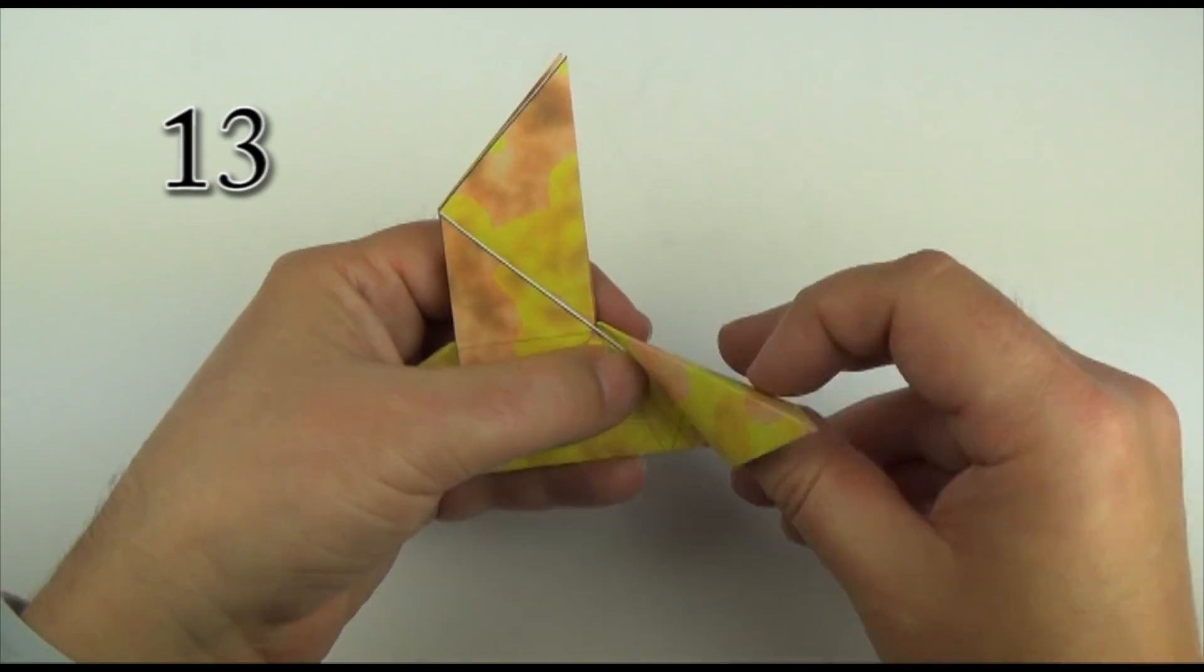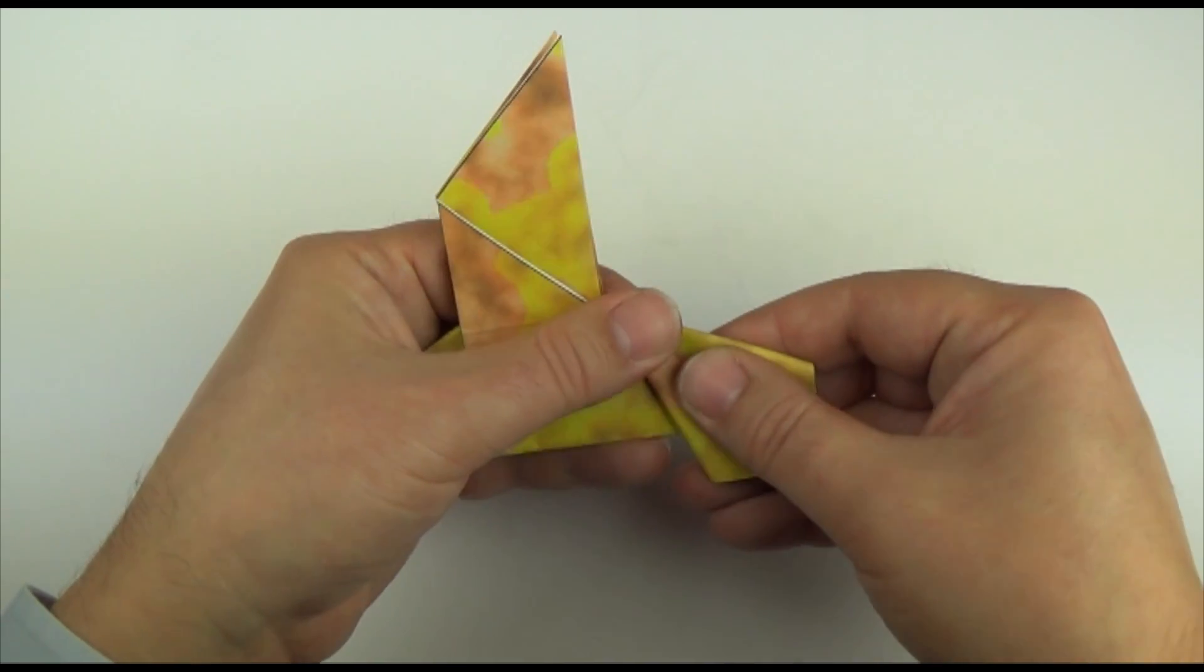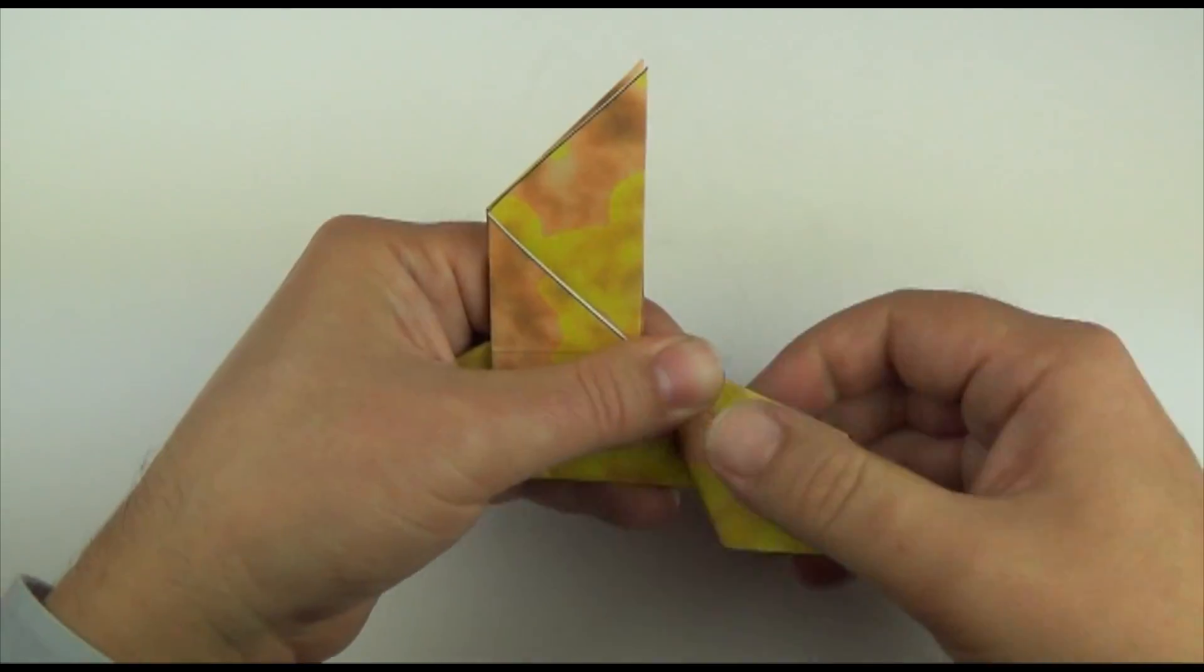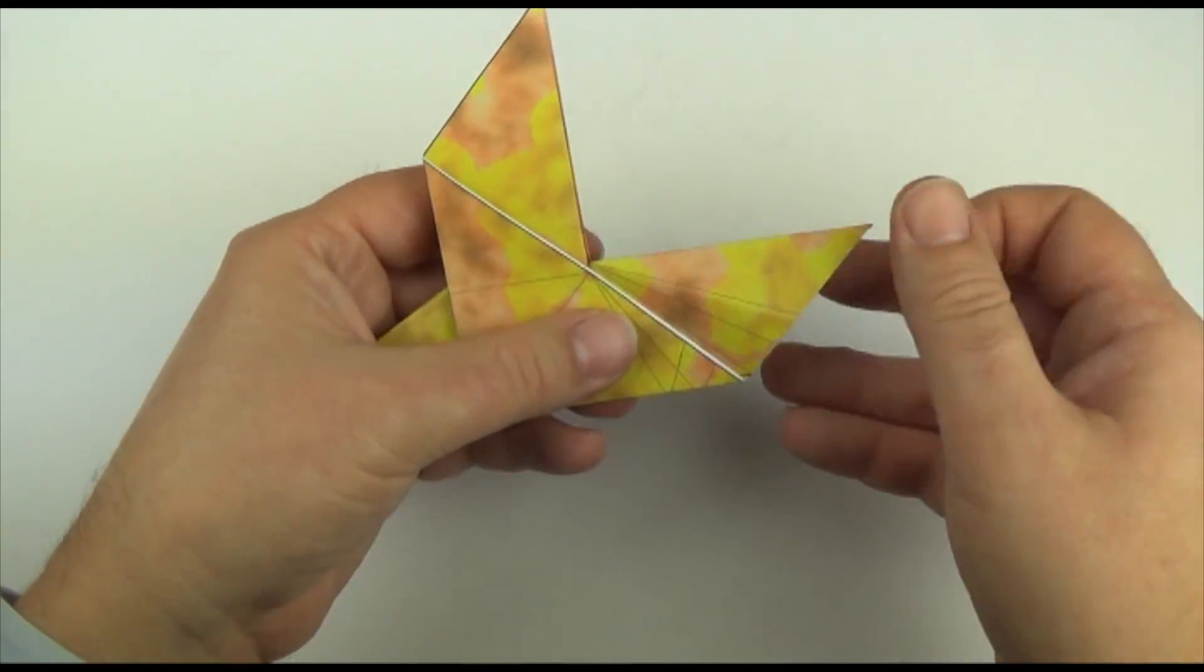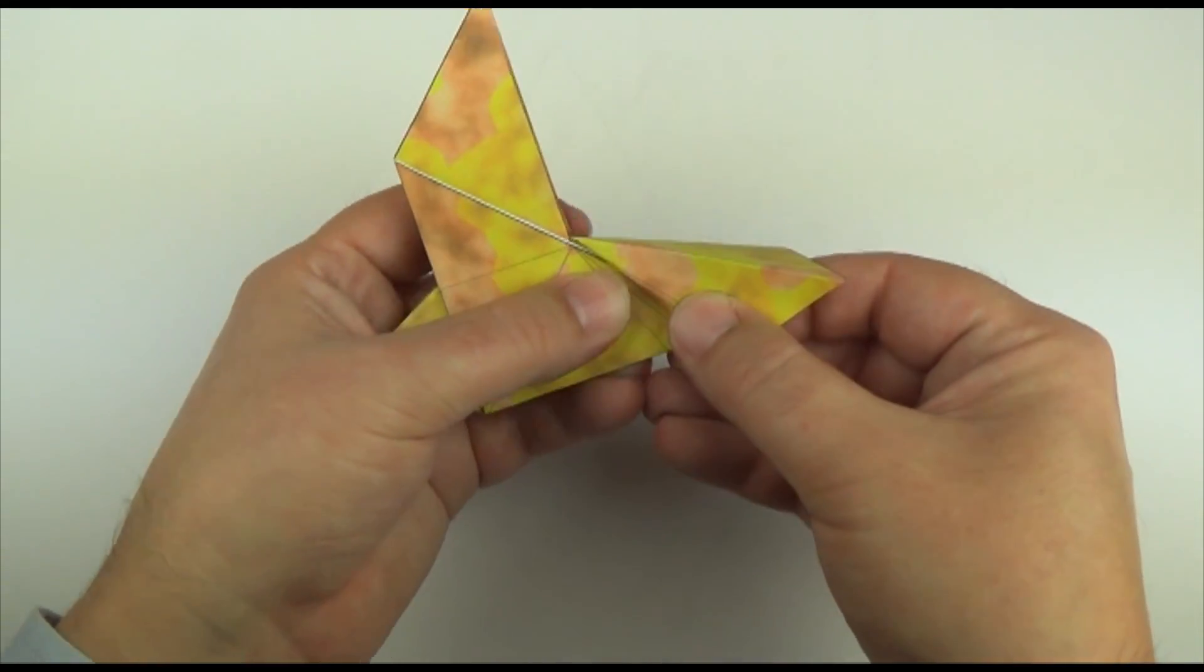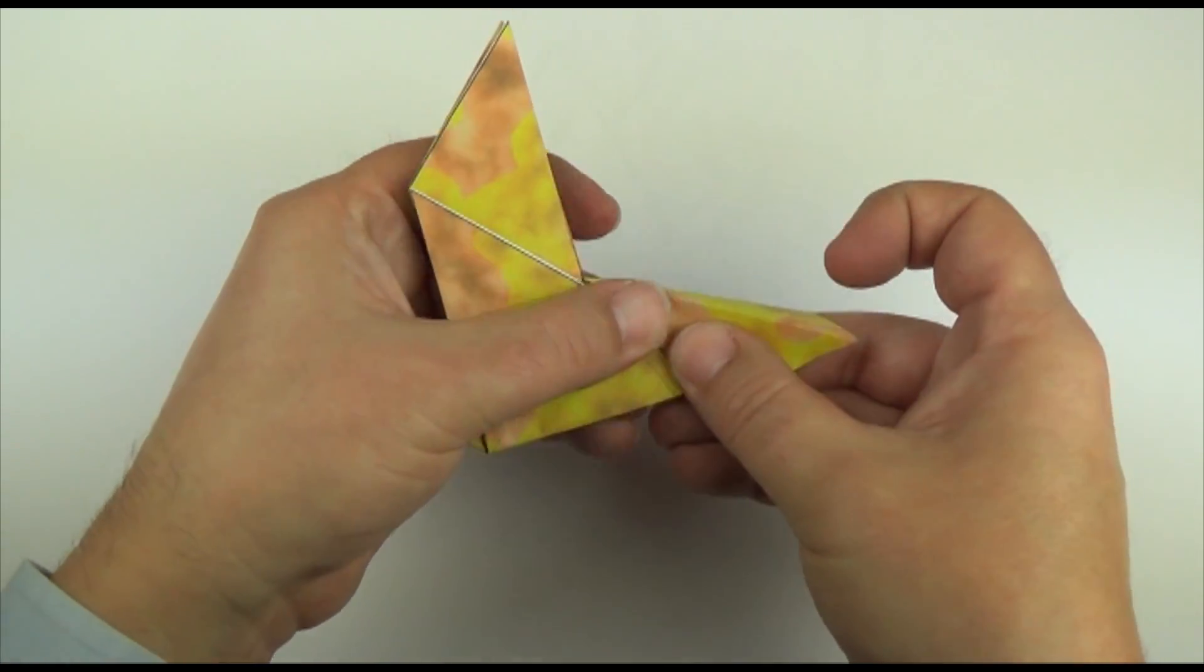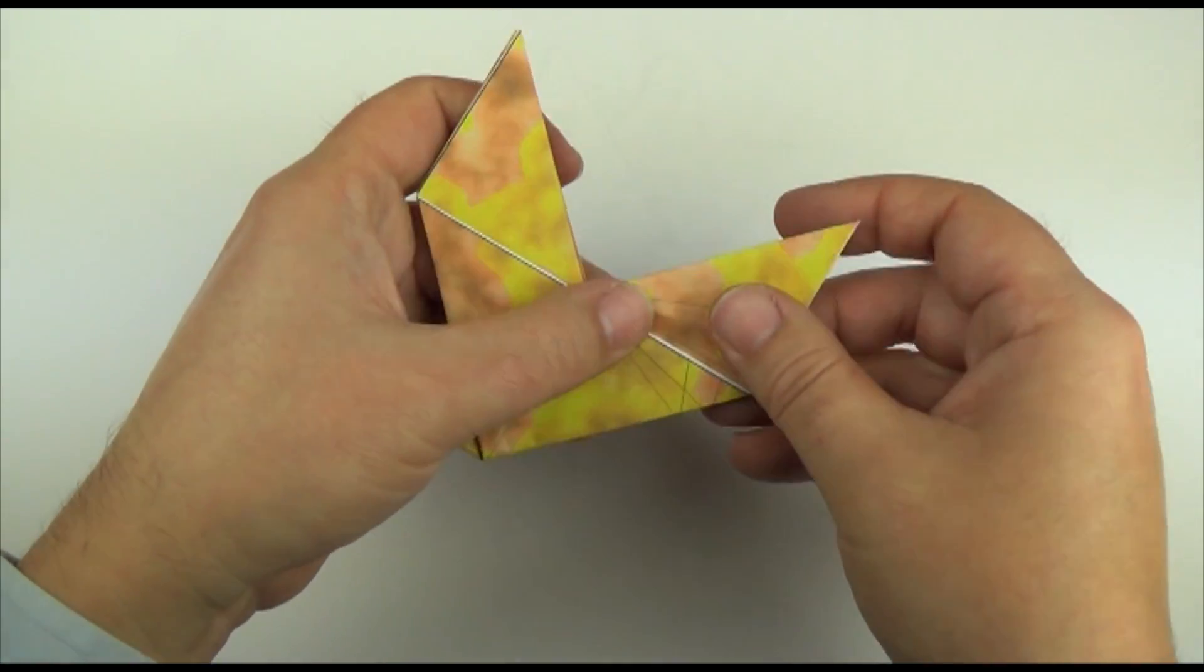And then I'm going to put my thumb inside and just fold over a little bit. Putting the whole crease there. But I'm just going to fold it back. So it's just a small crimp fold really. And crease.